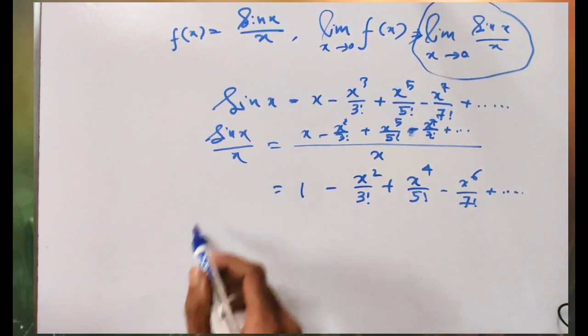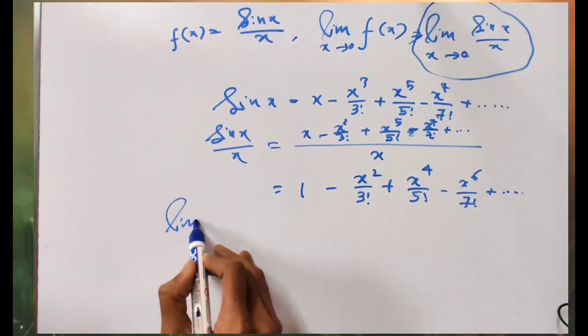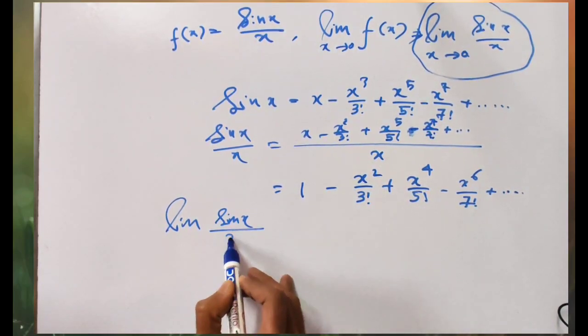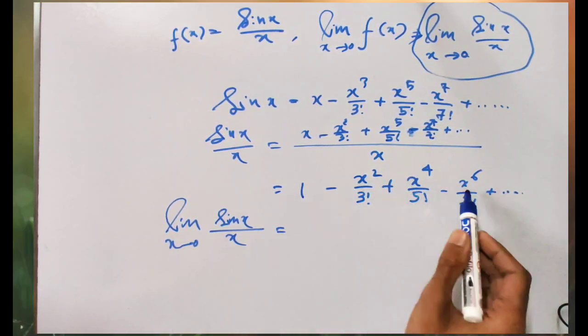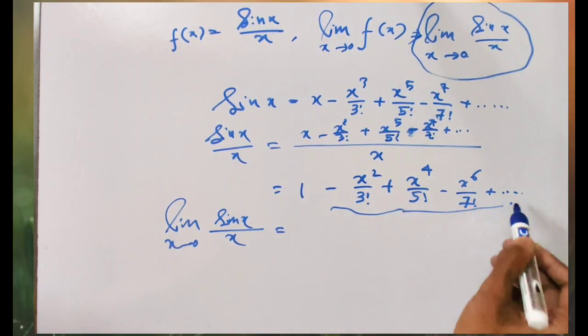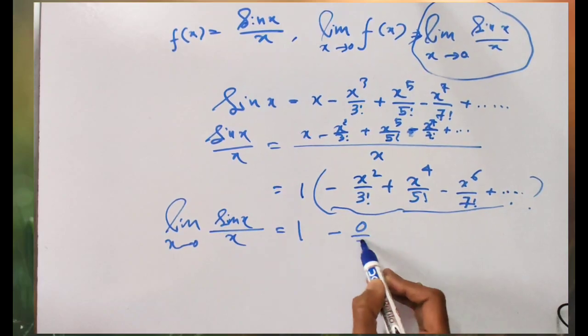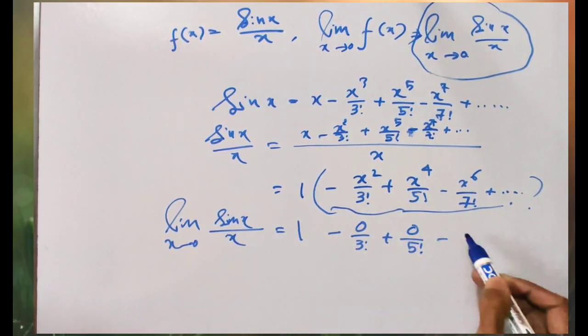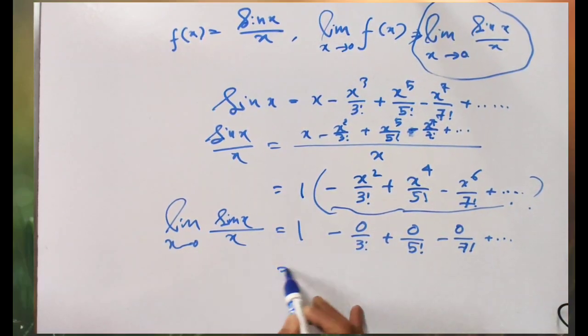Now if we apply the limit of sin(x)/x as x tends to 0, all the terms with x will become 0. So it will be 1 - 0/3! + 0/5! - 0/7! and so on. The limit is basically 1.